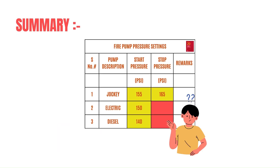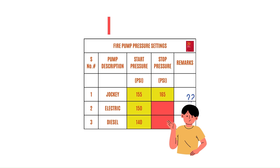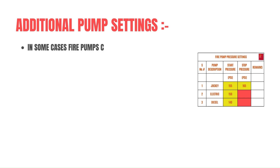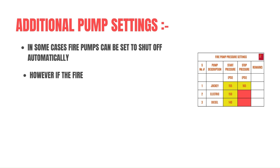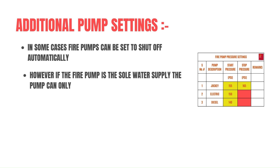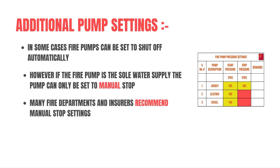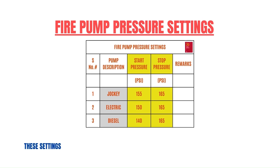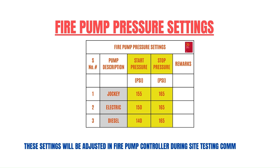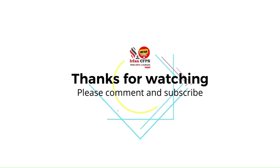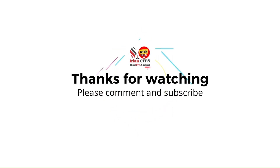This is the summary, but we also need to know additional details about the stop pressure. As per NFPA20, in some cases we can set fire pumps to shut off automatically; however, if the fire pump is the sole water supply, the pump can only be set to manual stop. Many fire departments and insurers also recommend manual stop settings. These are the ultimate pressure settings, which need to be adjusted in the fire pump controller during site testing and commissioning works.